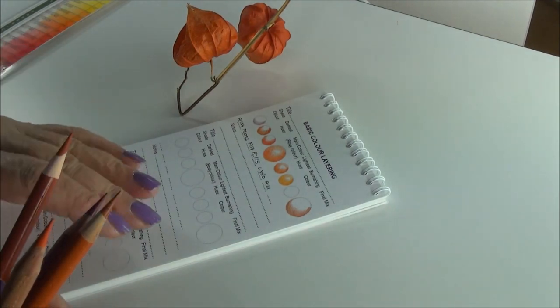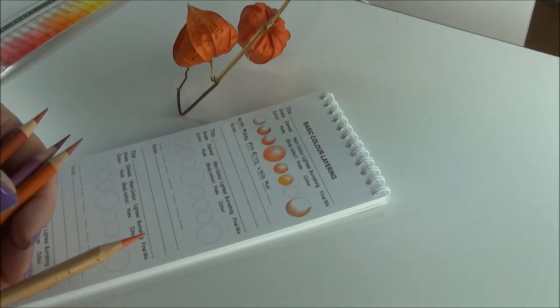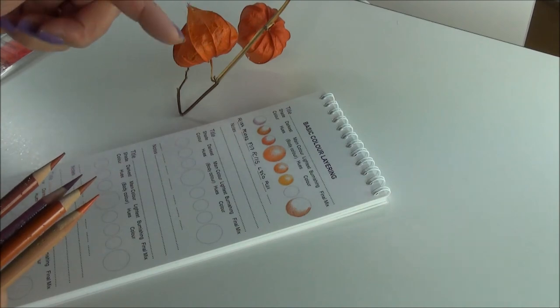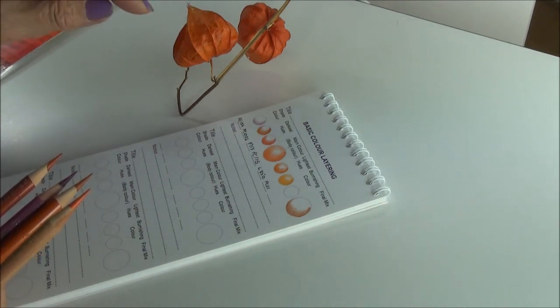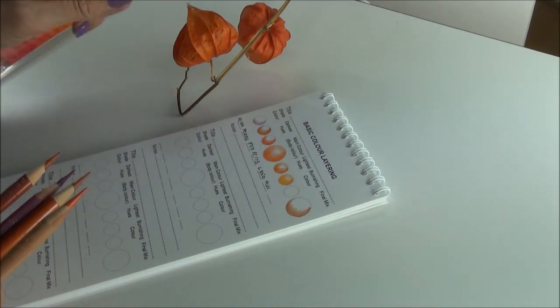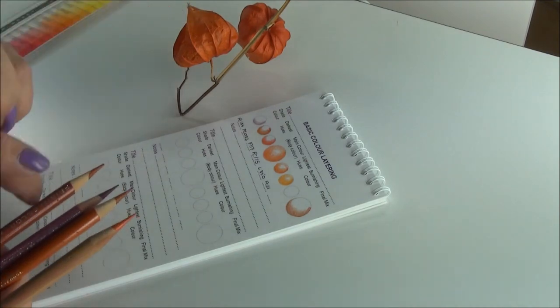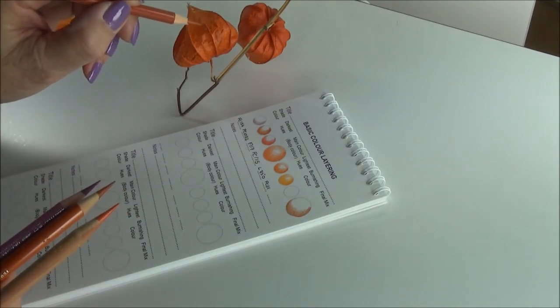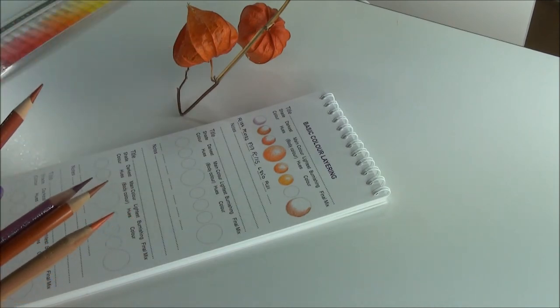Each layer takes you a little further in towards the highlights. So when you come to actually draw the Chinese lantern, you would start off with the shadows to give the form and then start to build up your colors, gradually moving across the surface until you get to these lighter areas.